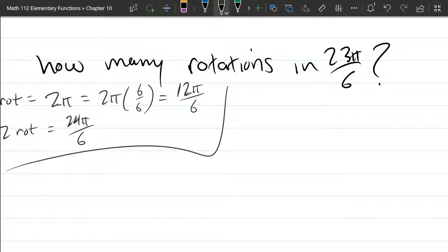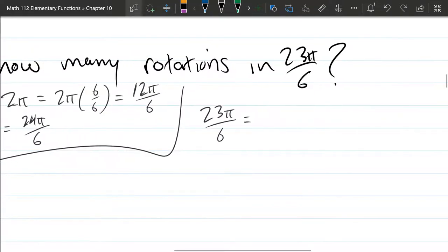Alright, so we did our little rotations over there. So I can write 23π over 6. There's two different ways to break it down. I can write it as 24π over 6 plus negative π over 6.